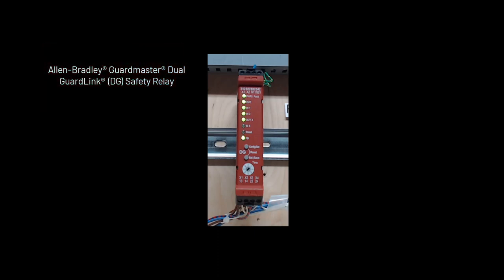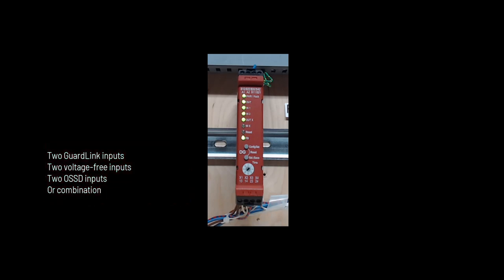This video will show how to configure the Allen-Bradley GuardMaster DG safety relay. The DG relay can accommodate one or two dual channel circuits. The inputs can be two guard lane circuits, two channels with voltage-free contacts like e-stops, two channels with OSSD signals like sensor guard switches, or a combination of the types of inputs.